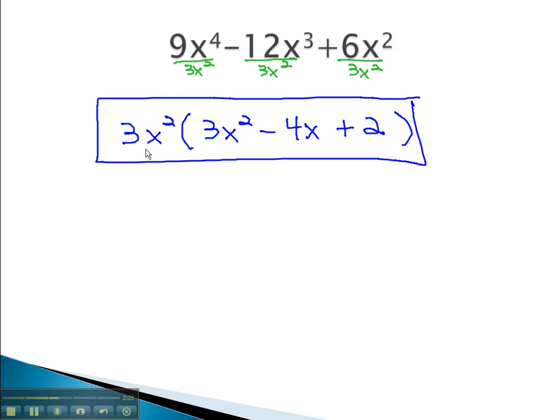Notice, if we were to multiply the 3x squared back through the parentheses by distributing, we would get the original problem that we started with.